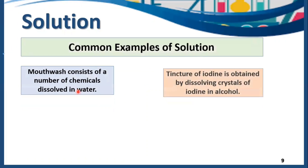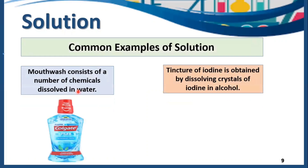Then comes the next example — mouthwash. Mouthwash consists of a number of chemicals that are dissolved in water. It means chemicals are acting as solute here and water is acting as a solvent. By mixing solute and solvent, we get a homogeneous mixture, and that homogeneous mixture is called a solution because it is uniform and we can't see the particles of solute with our naked eye.